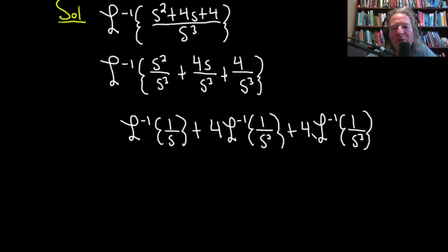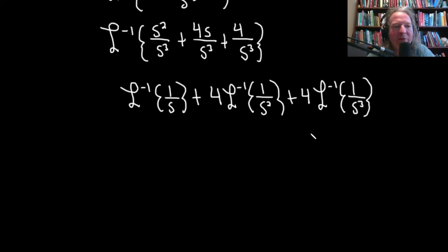Let me refresh your memory on some of the formulas we're going to use in this problem. First of all, this one is just going to be 1, because the Laplace of 1 is 1 over s. So the inverse Laplace takes 1 over s and sends it back to 1. So that's pretty easy.